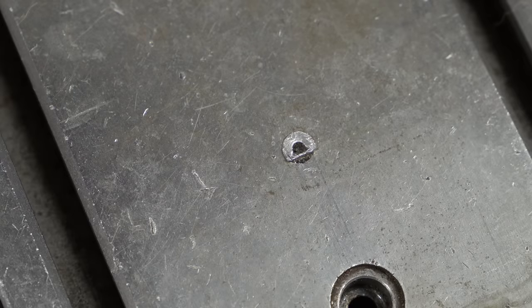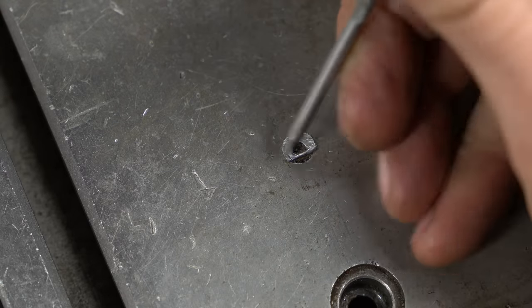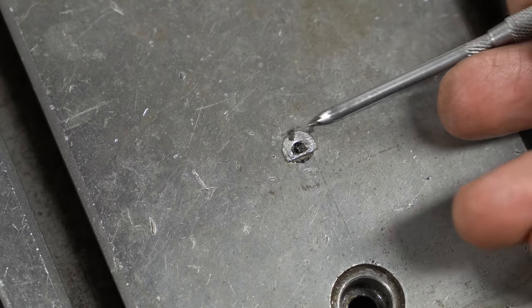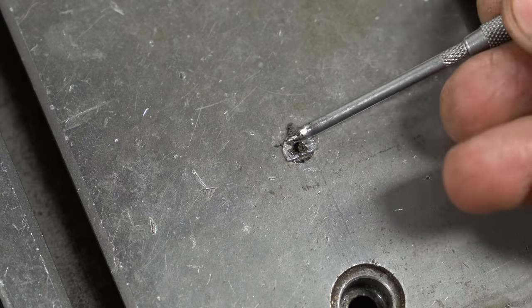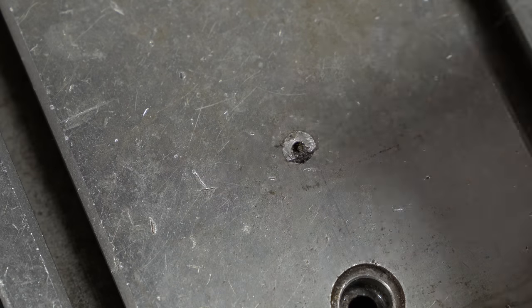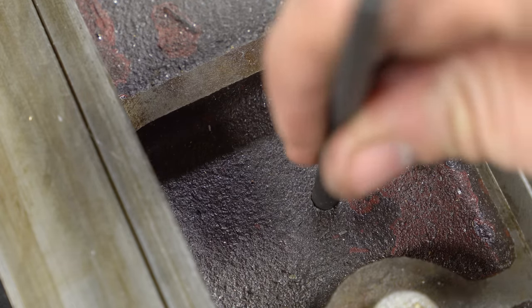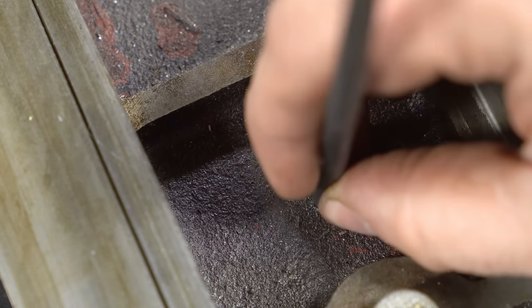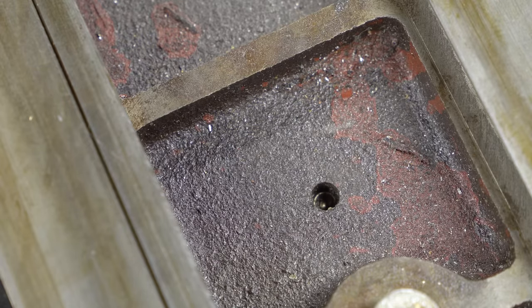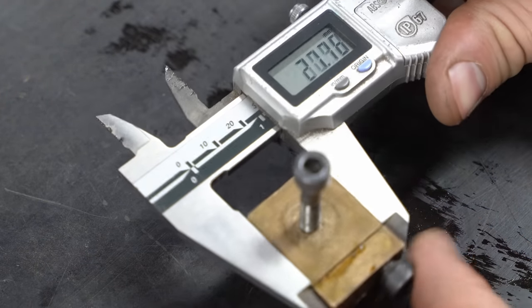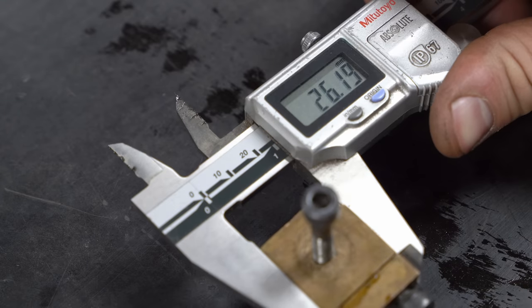Now I think the reason the cross-feed nut has gone has got to be because the oiler for the screw is damaged. And looking at the dirt in there, it hasn't been used in a while. I'm just measuring up approximately with my transfer punches to see what size these holes are, and I'll get some of these oilers on order. So that's one bad nut, one good nut, and two good screws. It could have been a lot worse.